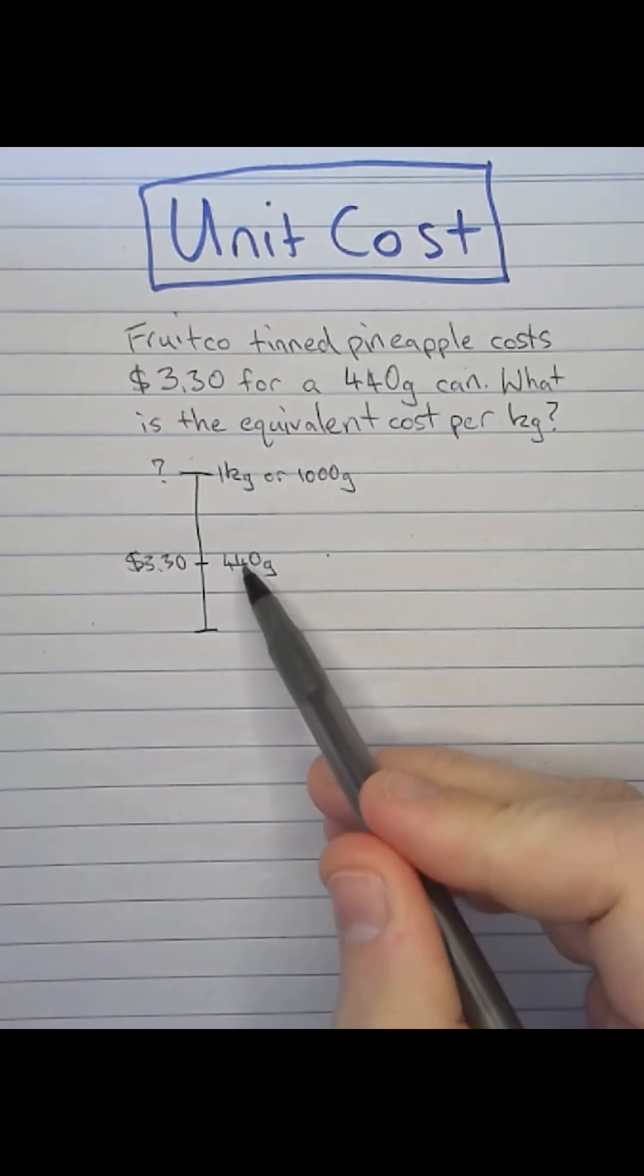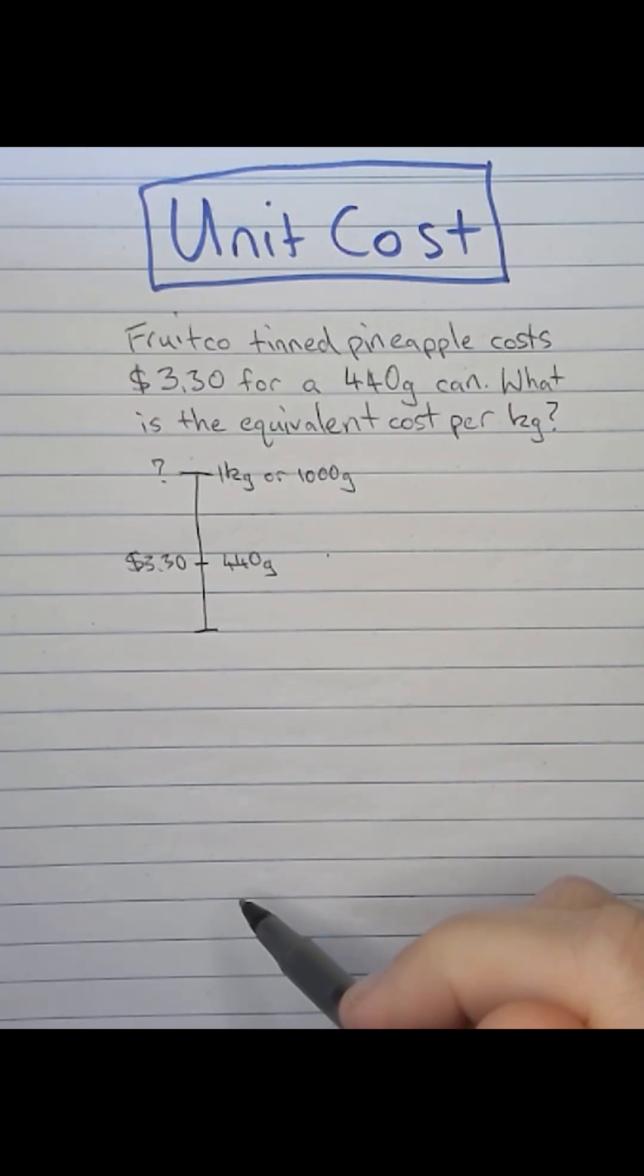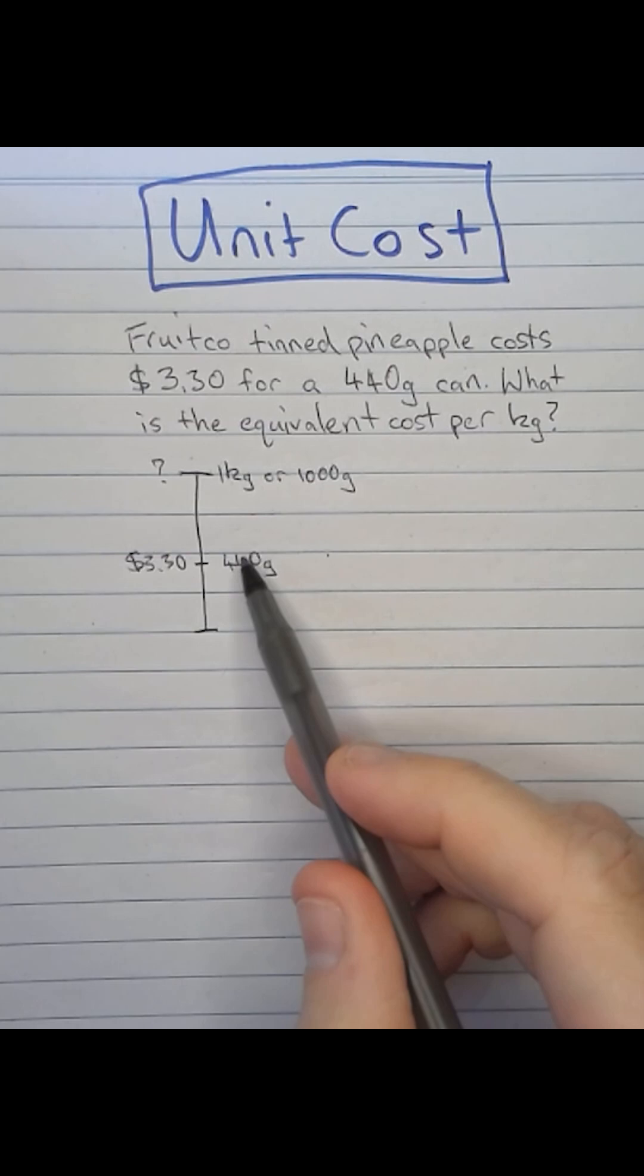Now 440 and 1000 don't really neatly multiply into each other or divide into each other. So I'm going to convert my 440 using the proportional relationship to a value or a weight in this case